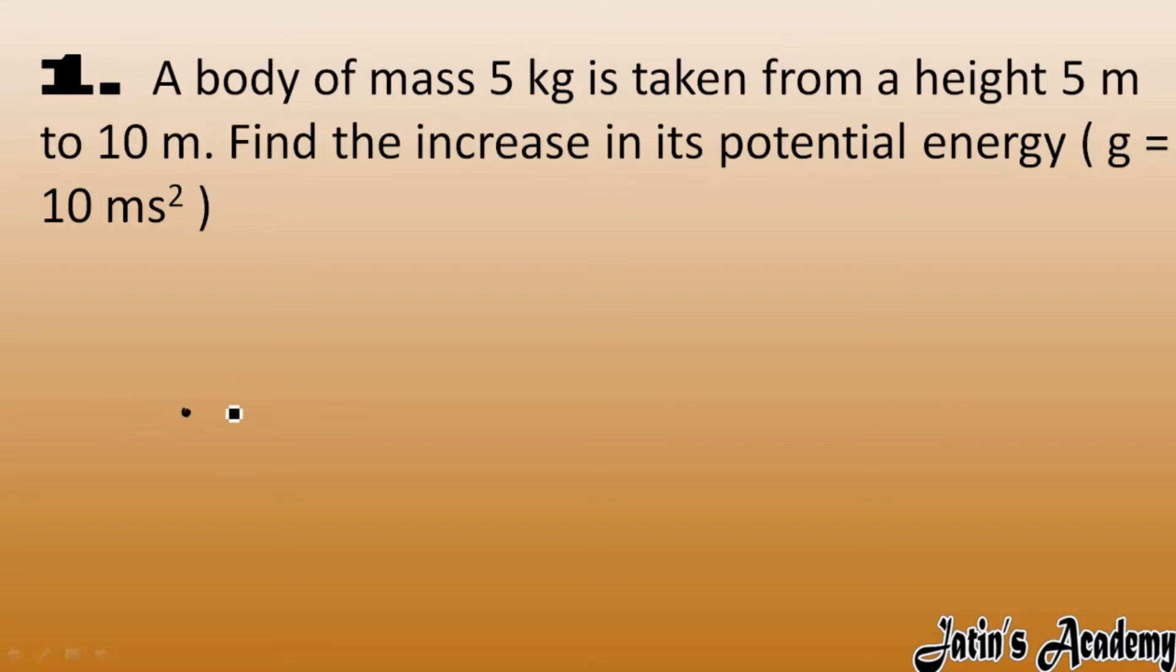The mass is 5 kg, which is initially at a height of 5 meters. Now this body is taken from 5 meters to 10 meters height, so the final height is 10 meters from the ground. This body is taken from point A to point B. We have to find the increase in potential energy.